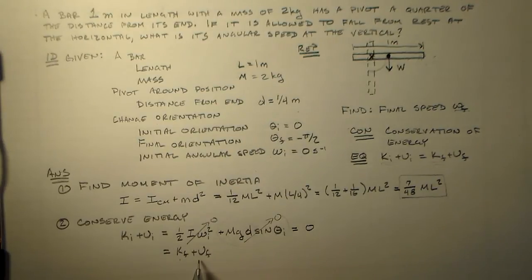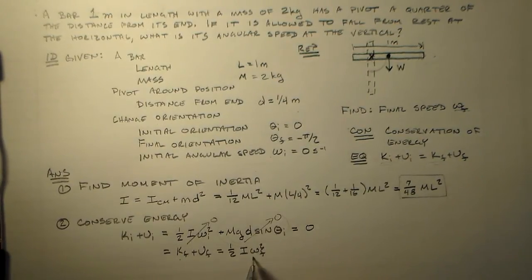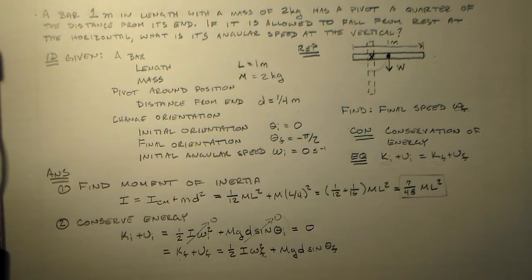So that equals K_f plus U_f, the final kinetic plus potential energy, which is one half I omega_f squared - this is what we're looking for - plus MGd sine theta_f. It's time to solve.